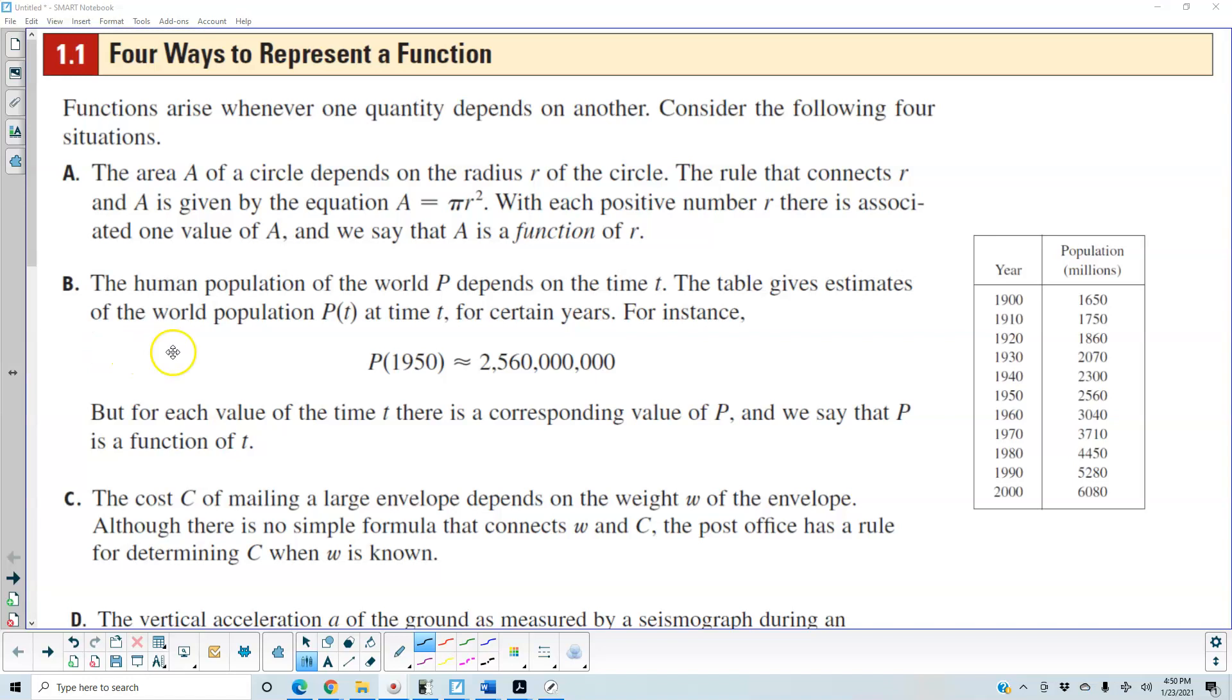Part B: The human population of the world P depends on the time t. If you look at this table here it gives estimates of the world population P of t at time t for certain years. For instance P of 1950, which represents the year, is the input and gives us an output of 2560 million, which is the same thing as 2 billion 560 million. But for each value of time t there is a corresponding value of P and we say that P is a function of the time t.